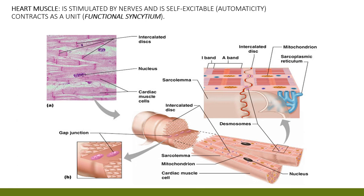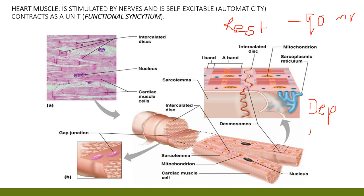You see intercalated discs connecting each cell to each other. The cardiac muscle cell at rest measures about minus 90 millivolts. When your cardiac muscle depolarizes, it goes to plus 20 millivolts during depolarization.